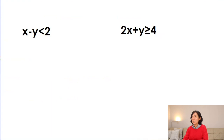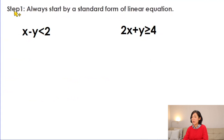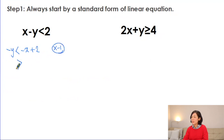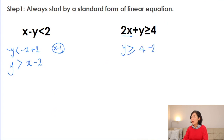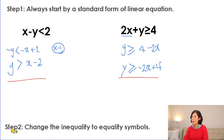Step one — start with the standard form. Since we have two inequalities, we need to change them into standard form with y on one side. For the first inequality, we get minus y is less than minus x plus 2. Multiplying by minus 1 and reversing the symbol gives y is greater than x minus 2. For the second inequality, y is greater than or equal to minus 2x plus 4.